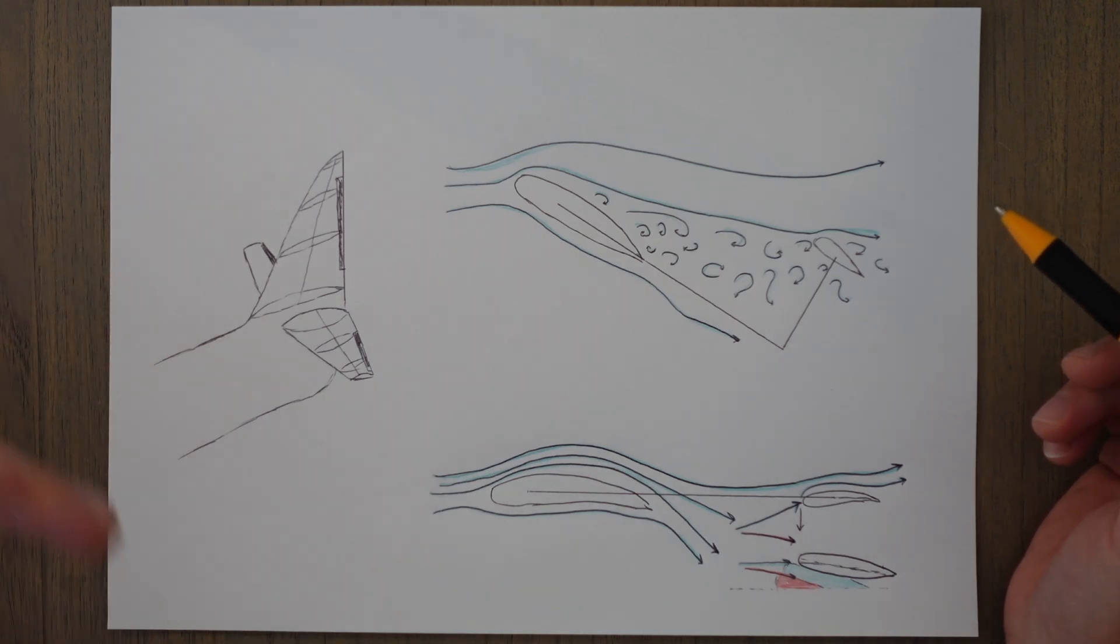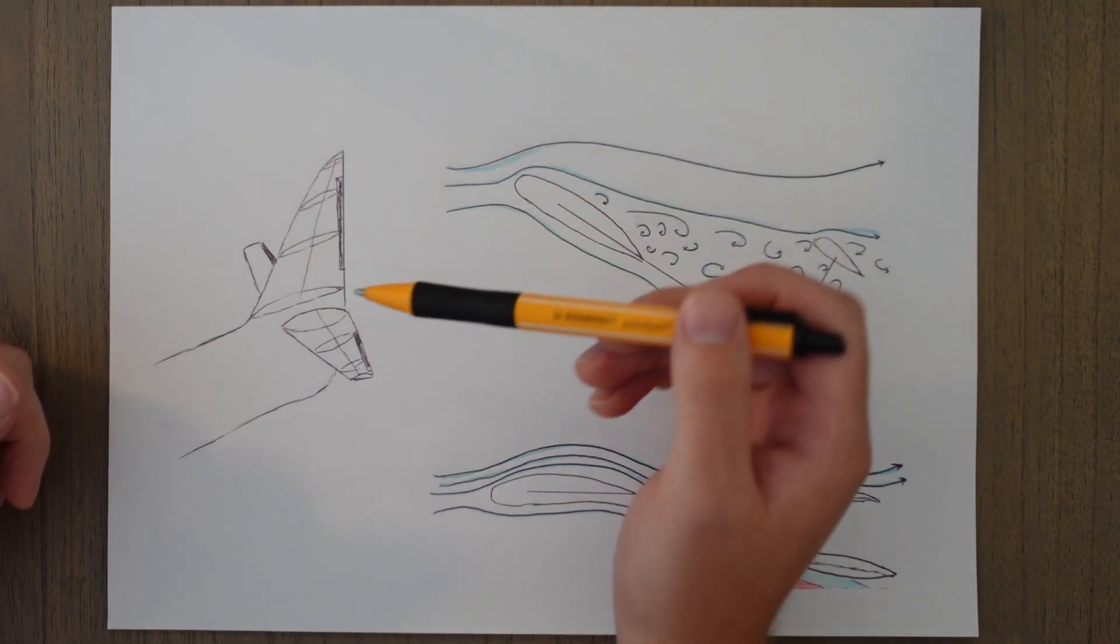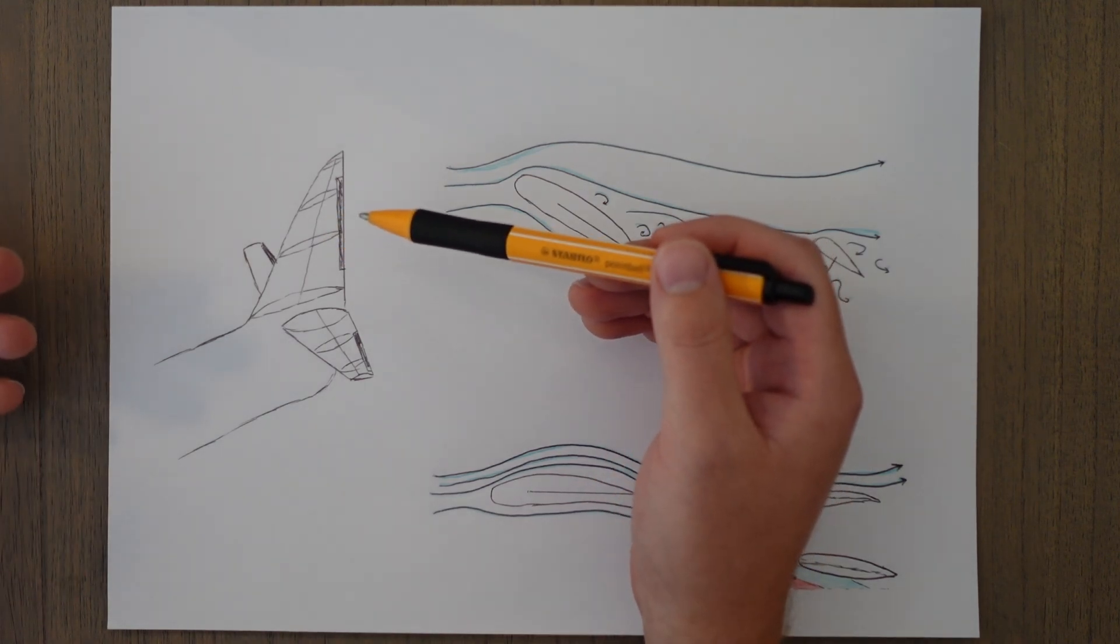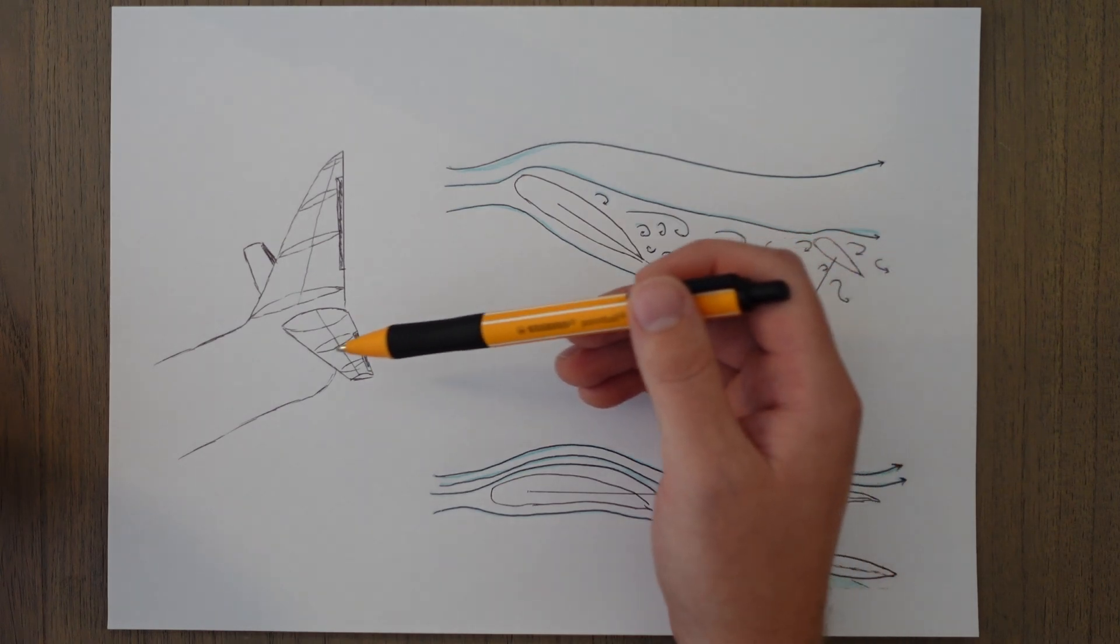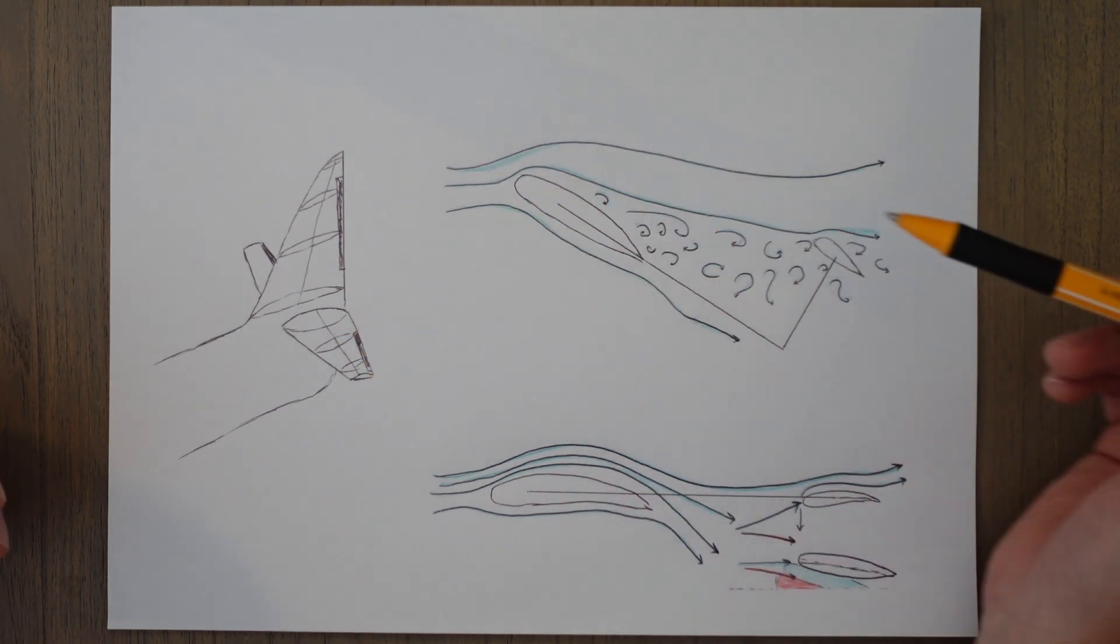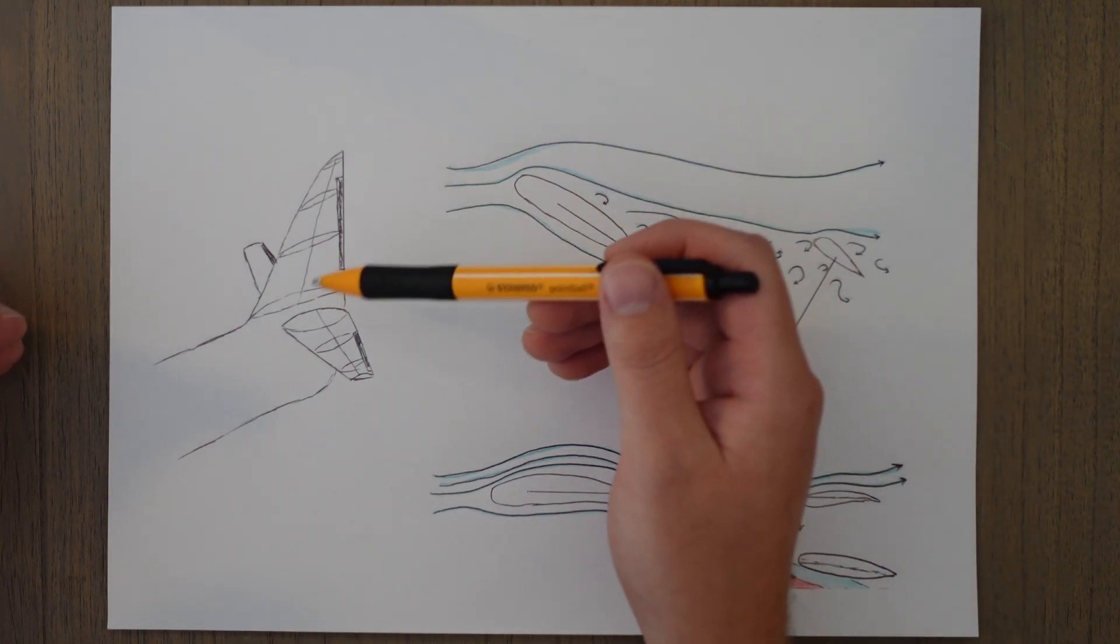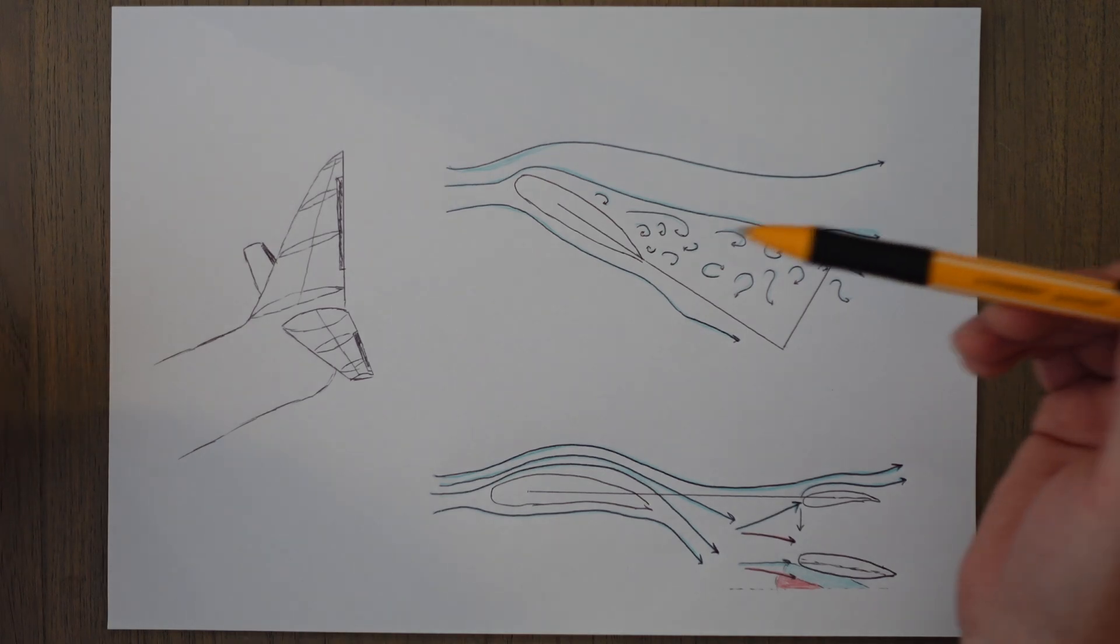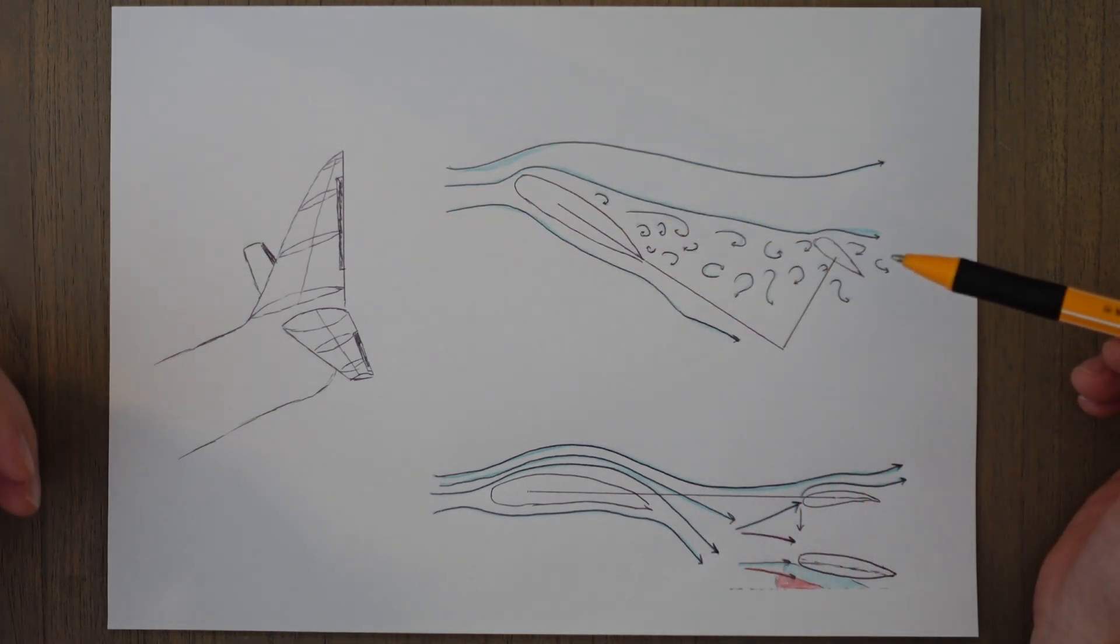The tail assembly or empennage is generally constructed of two parts: the vertical fin and the horizontal tail plane. The fin provides yaw stability and has the rudder attached to it to control the yaw. The horizontal tail plane provides stability in pitch and has the elevator attached to control the pitch. They are constructed in the same way as the wings. They have a frame consisting of spars and ribs with a metal skin stretched over the top. The spars generally provide the strength and the ribs generally provide the shape, but there is a bit of crossover between the two.